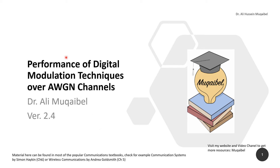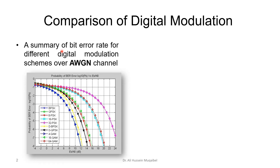In this video we look at the performance comparison between digital modulation techniques. We'll start with performance in additive white Gaussian noise channels, and in coming videos we'll look at performance under wireless fading channels. The material in this video is from popular communication textbooks like Haykin and Goldsmith. For more resources, please visit my website — search for Mugable on Google.